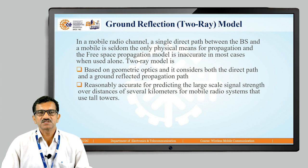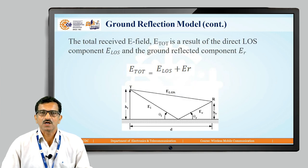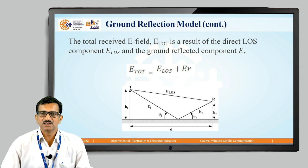As discussed, environmental conditions are neither perfect dielectric nor perfect conductor, which is why different scenarios arise for ground reflection models. The ground reflection model takes into consideration two things: total power received and total received signal E-field. E_total is the result of the direct LOS (line-of-sight) component and the ground-reflected component.